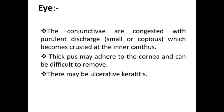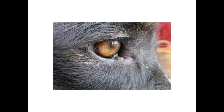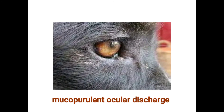Ocular involvement results in congested conjunctiva with purulent discharge — small or copious — which becomes crusted at the inner canthus. Thick pus may adhere to the cornea and can be difficult to remove, and there may be ulcerative keratitis. A diagram shows mucopurulent ocular discharge as a key sign.